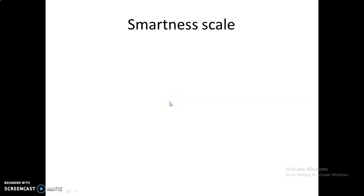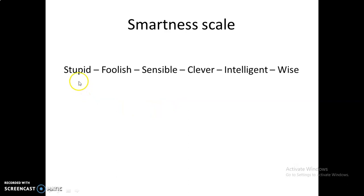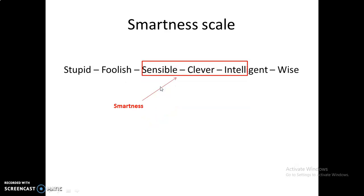Smartness can be measured on an intelligent scale. If you form a scale from stupid to wise, we can measure the smartness in between — from sensible, highly sensible, to poor intelligence. In the case of materials, those materials capable of being sensible or poorly intelligent are classified under smart materials.